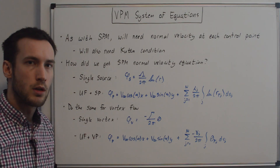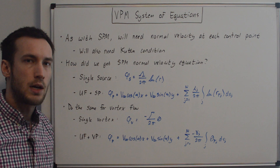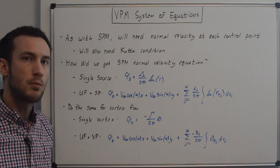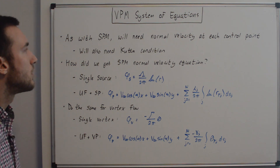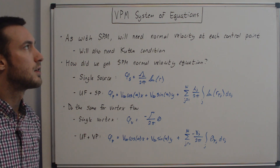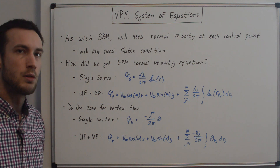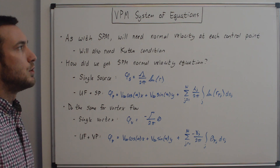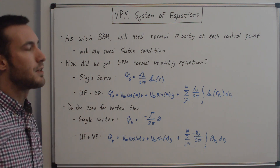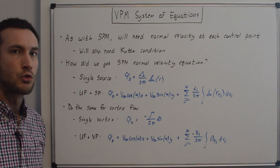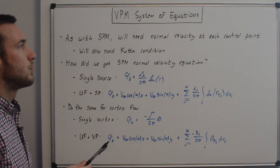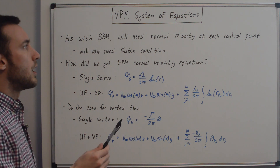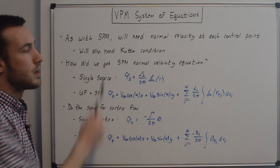Hey everyone. In this video we're going to be going through the final step before we code up the vortex panel method. This video is similar to the source panel method system of equations video in that we're building up the system of equations using the normal velocity at every control point. The difference here is that we'll need one more equation based off of the Kutta condition.